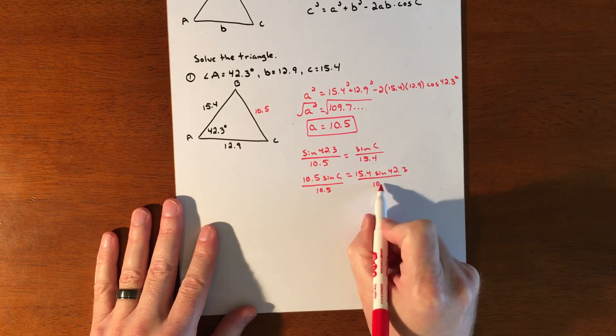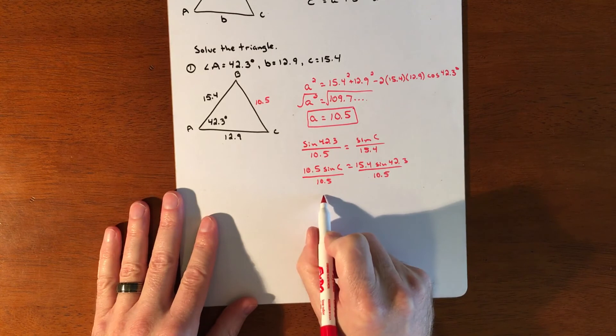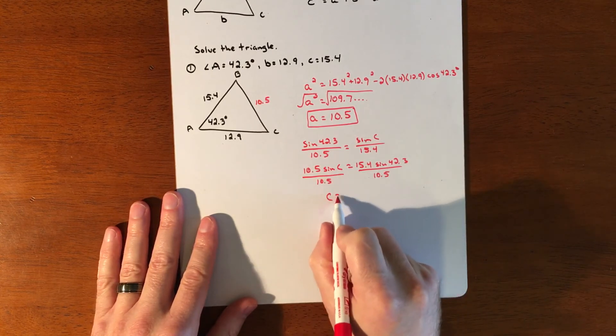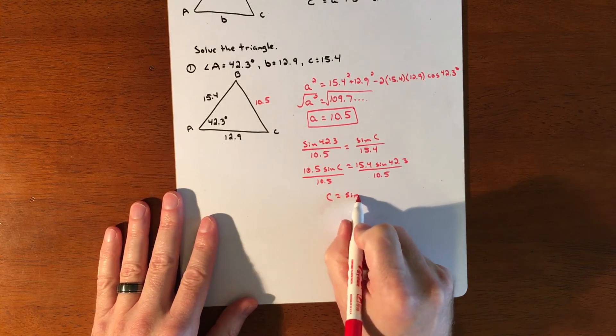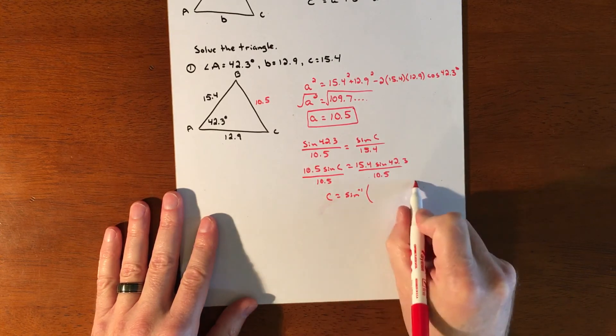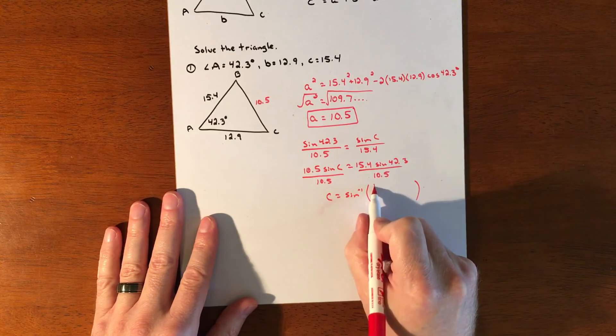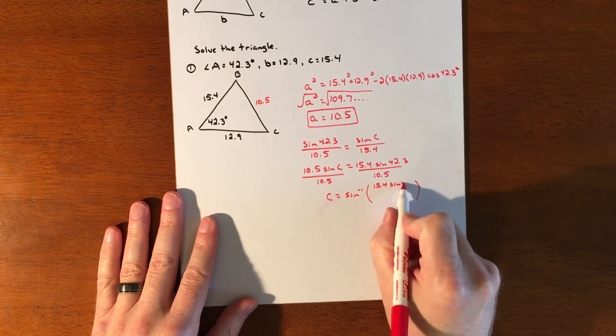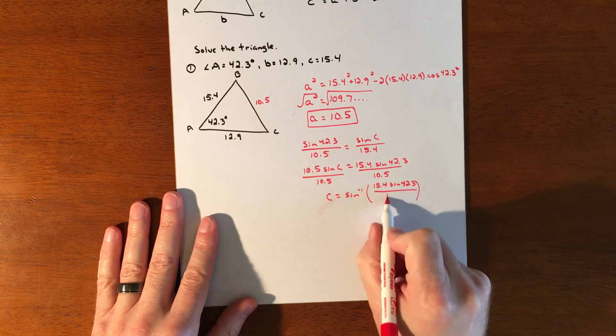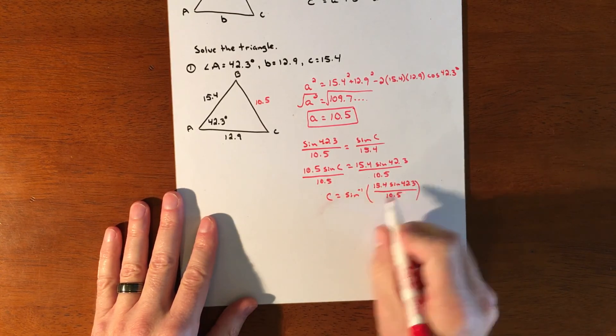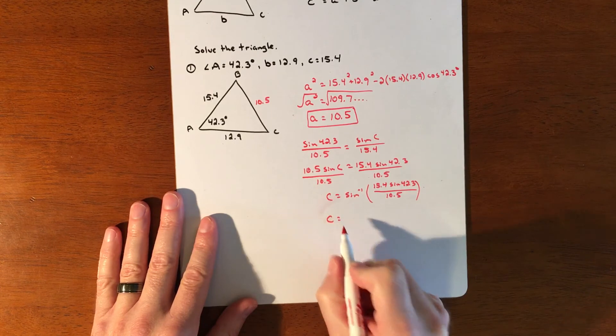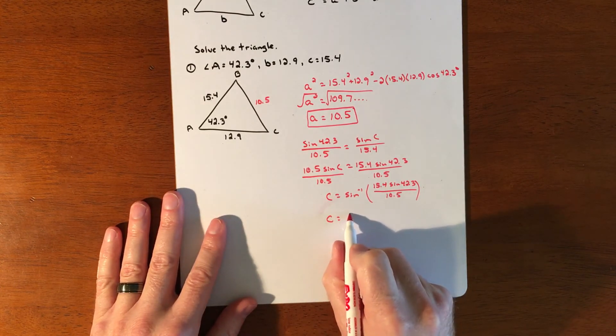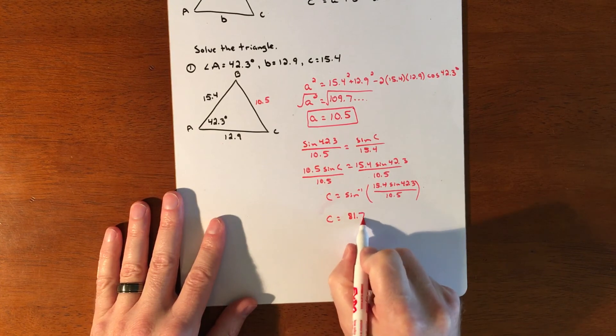And we're going to do the inverse sine at the same time. So c is going to be the inverse sine of whatever this fraction gets me. So sine of 42.3 times 15.4 divided by 10.5. So angle c is roughly 81.7 degrees.